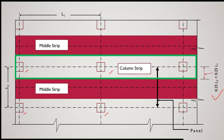IS code states that the width of the column strip should be 0.25 L2, but should not be more than 0.25 L1, where L1 is the panel span length in one direction and L2 in the other. The column strip is a strip in which columns are located — for example, column numbers one, two, and three form a column strip, and its width extends from the column center on each side.